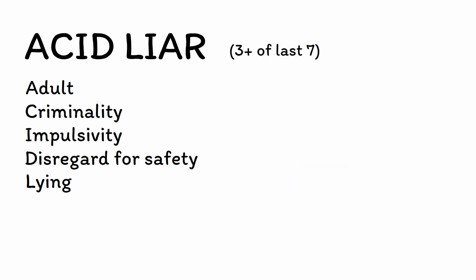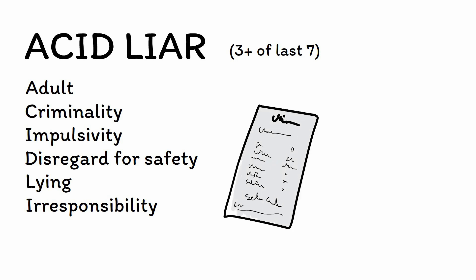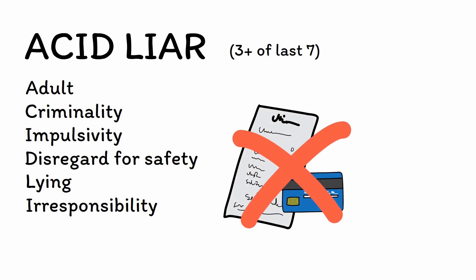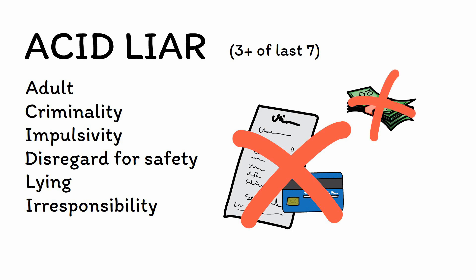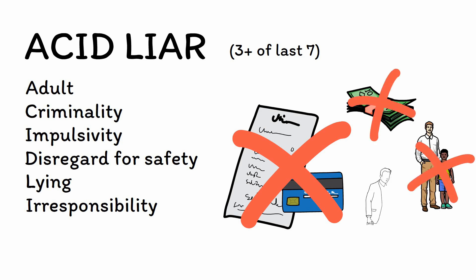I is for irresponsibility. Another manifestation of the low conscientiousness seen in ASPD is a chronic failure to honor both personal and societal obligations, such as refusing to repay debts, neglecting to care for children, and being unwilling to work.